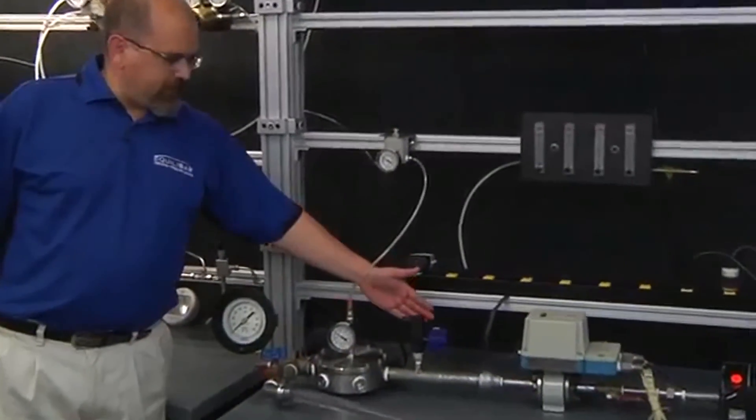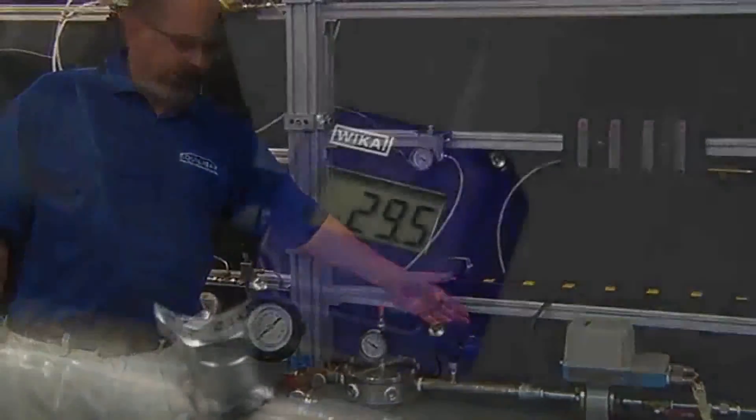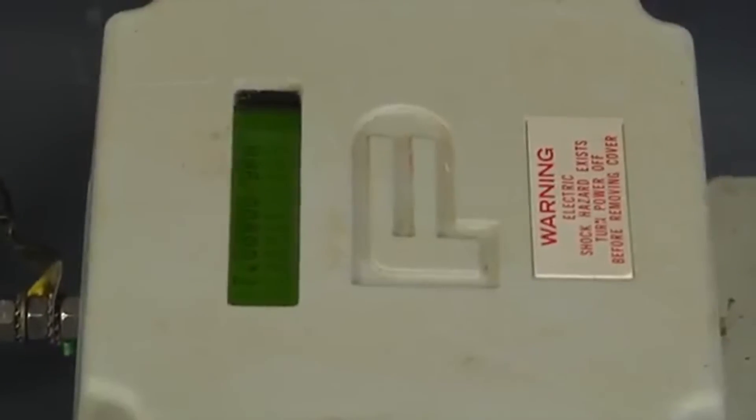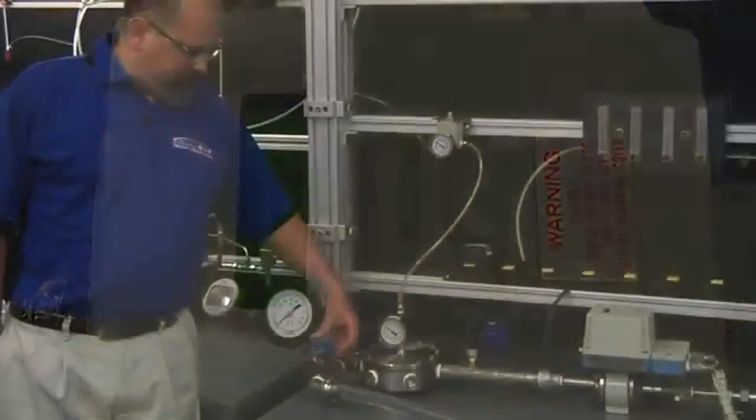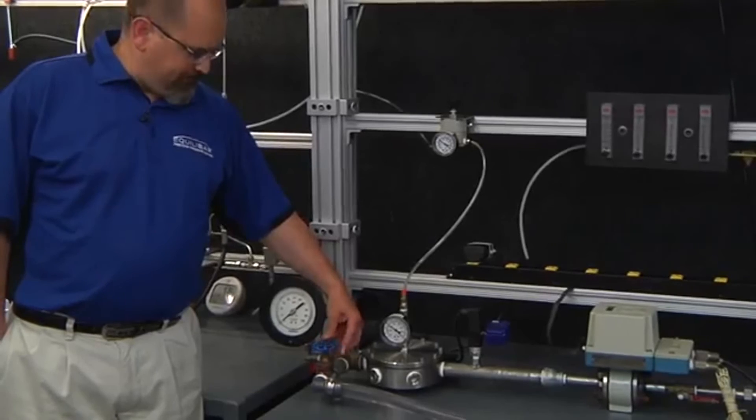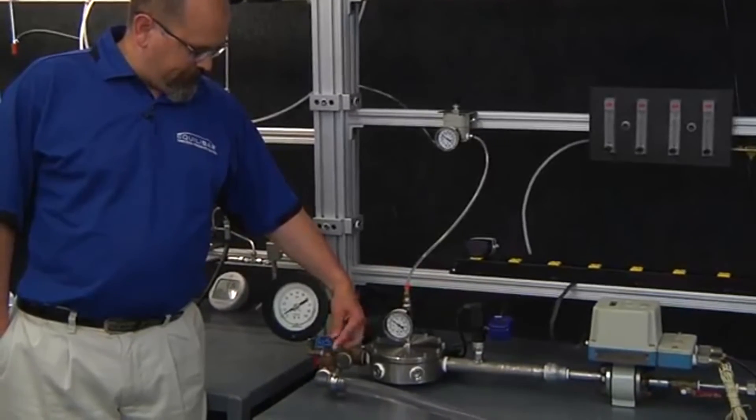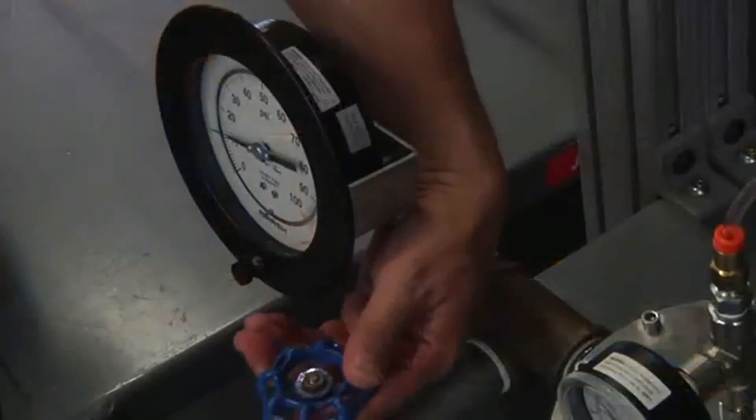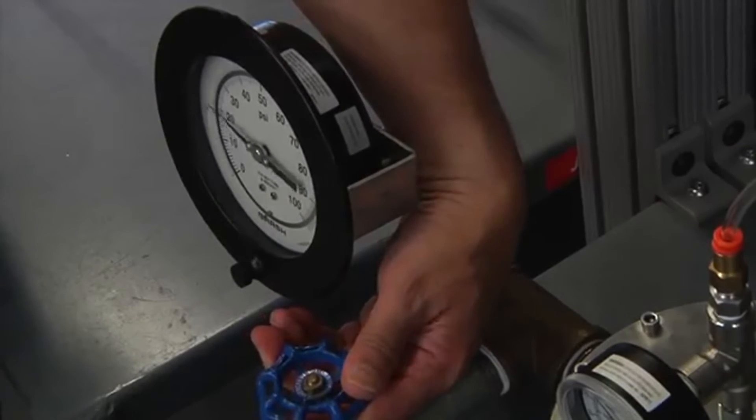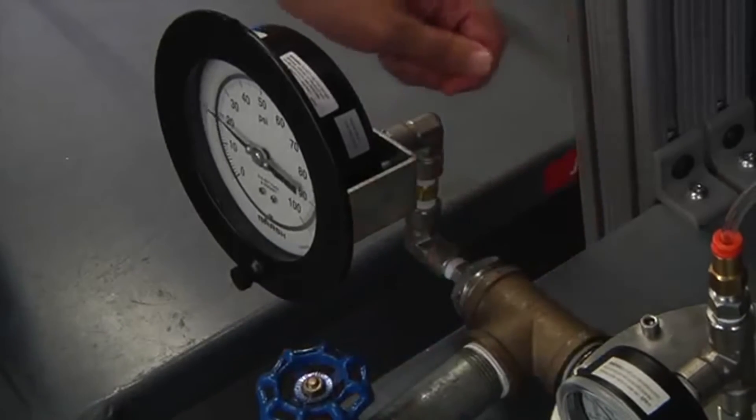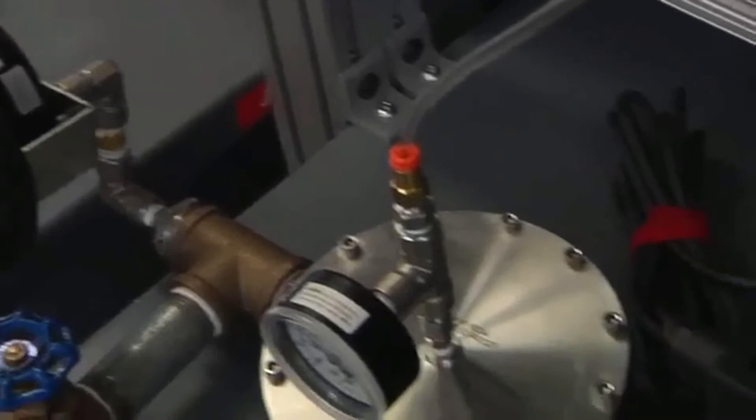So right now we've set the pressure at 30 psi. And I am going to increase the restriction in the system. You can see that pressure beginning to rise. I'm going to bring that all the way up to 20 psi. And now the system restriction is at 20 psi.